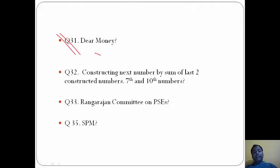Question 31: Dear Money. Dear money is said to be the money taken at a high rate of interest, so the option here will be C.